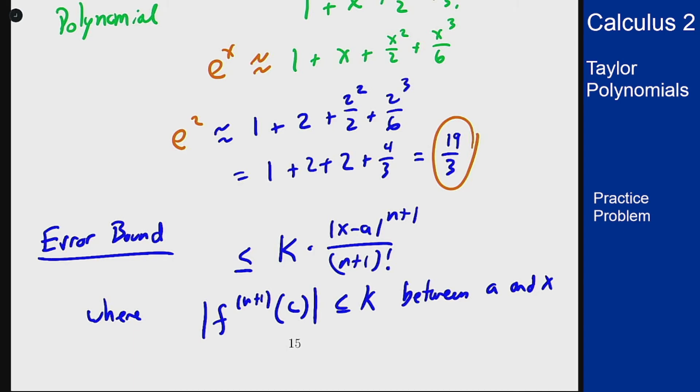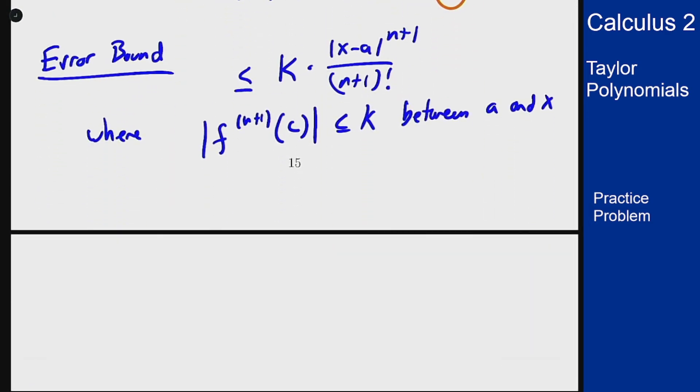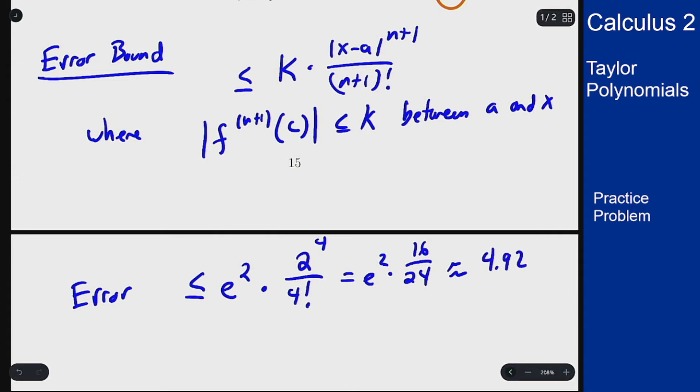So in this case the hint above tells us to use e squared for this upper bound. So using that, we know that our error here can be bounded by e squared times (x - a), which is how far away, which is 2 to the power (n+1). n here is the highest degree we have which is 3, so that's 4 over 4 factorial, which is e squared times 16 over 24. Plugging into a calculator is approximately about 4.926.